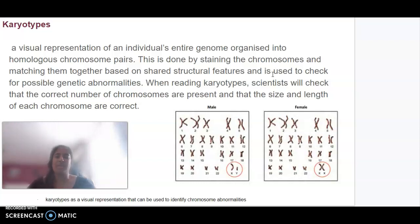When reading karyotypes, we can look at the number of chromosomes that are present. We can also identify those last two chromosomes, whether they are X and Y for male or X and X for female.